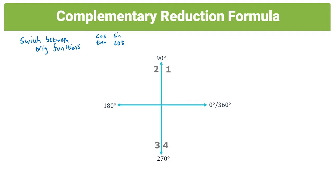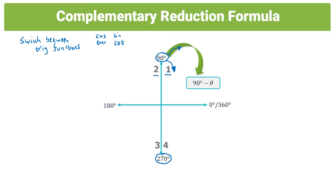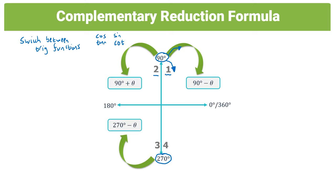Our complementary angles are 90 degrees and 270 degrees. For each quadrant, the machines are: first quadrant — 90 minus theta (90 pull backwards); second quadrant — 90 plus theta (90 push forward); third quadrant — 270 minus theta (270 pull backwards); fourth quadrant — 270 plus theta (270 push forward).